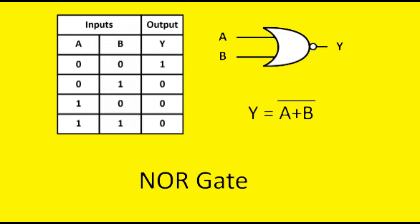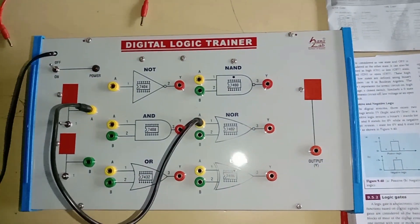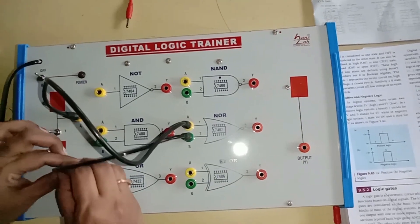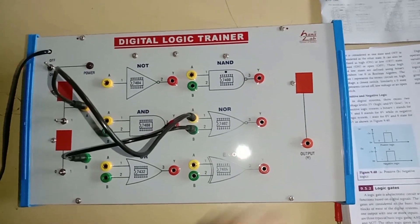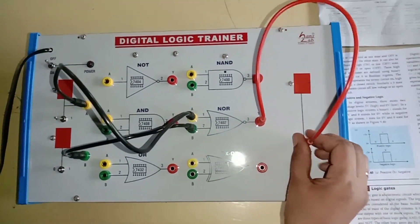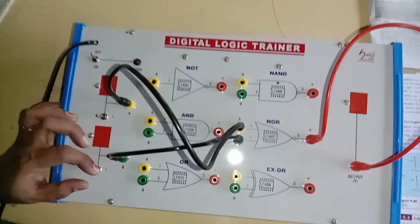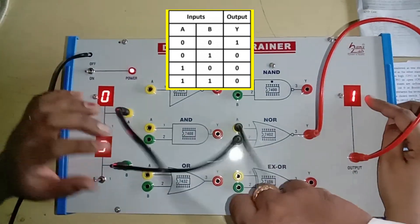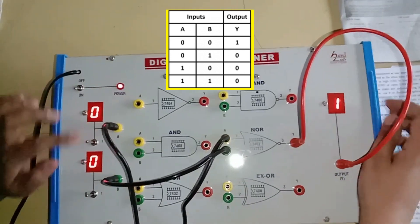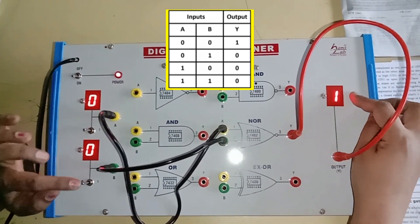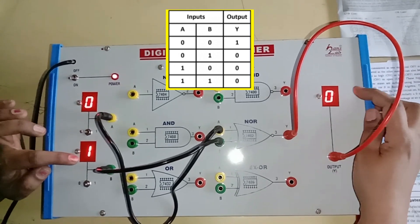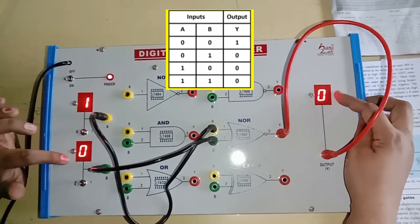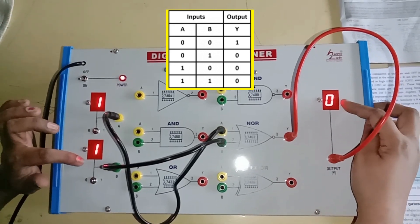Next is the NOR gate. Similarly, terminal 1 and terminal 2 are given to inputs A and B. From terminal 3, the output is taken. Now the kit is turned on. With input 0,0 the output is 1. With input 0,1 the output is 0. With input 1,0 the output is 0. With input 1,1 the output is 0. Thus the NOR gate is verified.